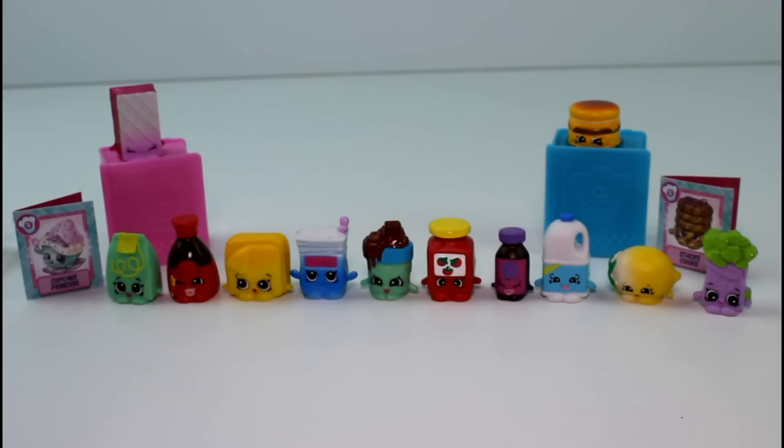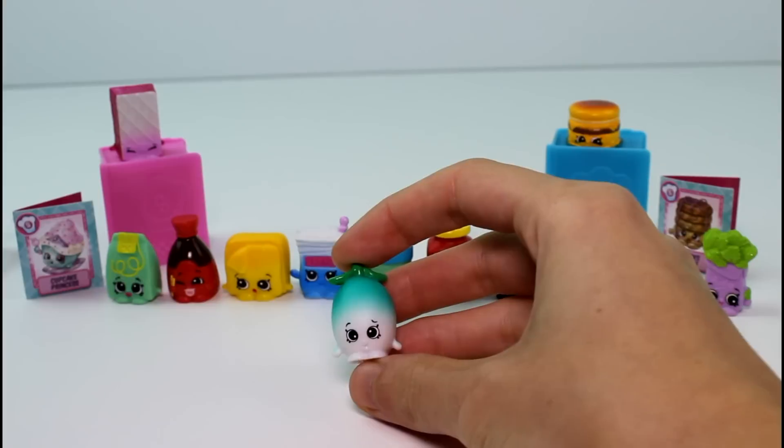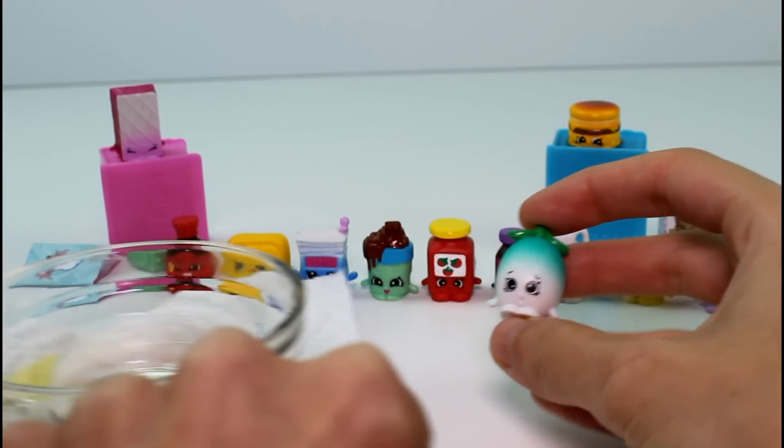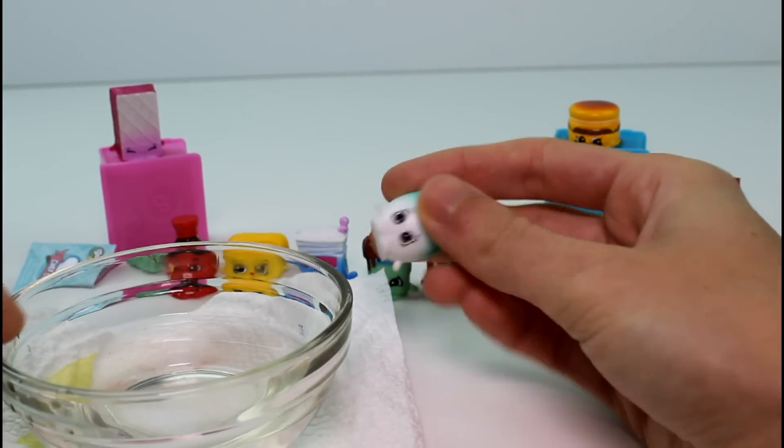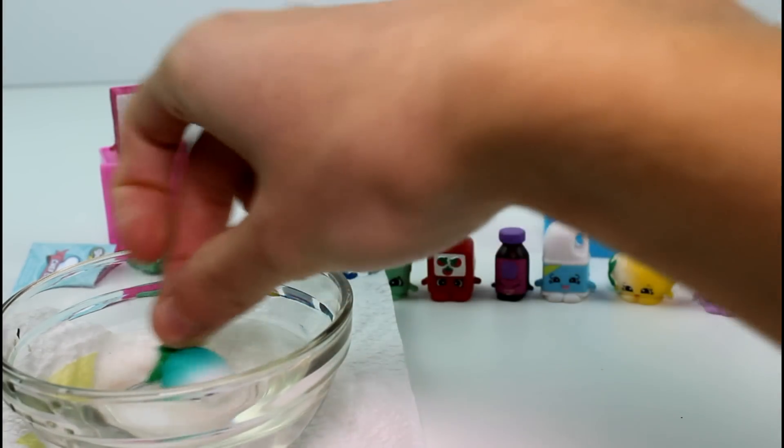Let's just jump right into the Color Change Shopkin. Which is this one. And I was like, is this a mango? What is this? And then I looked and it's Olivia Olive. So, let's bring in the water. I'm not sure if she'll change with warm or cold. So we'll try warm first. Oh yeah, okay.